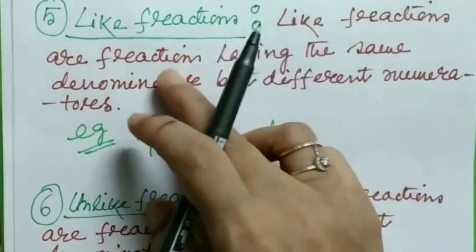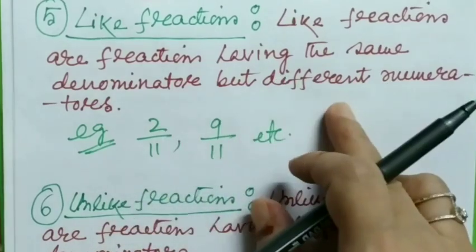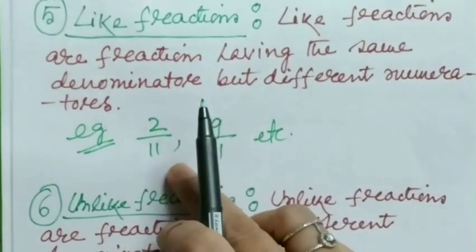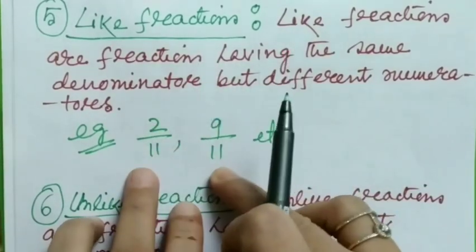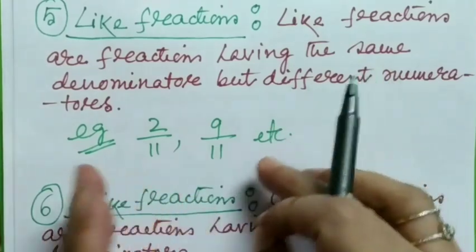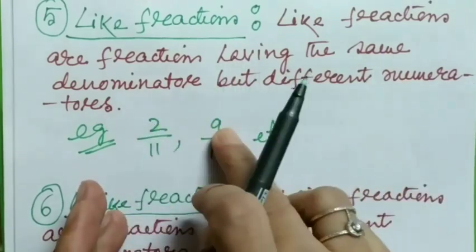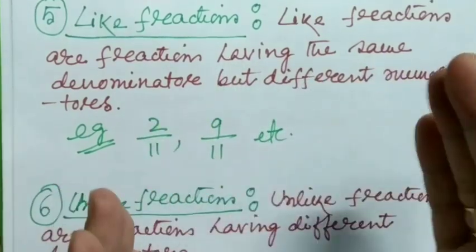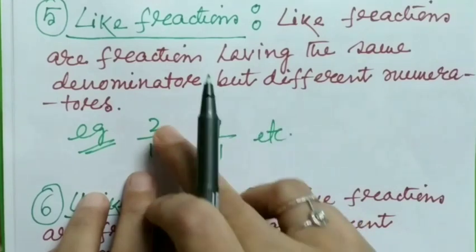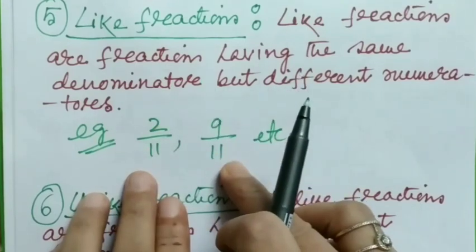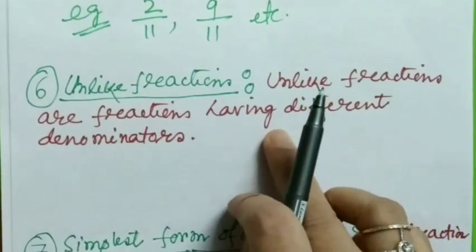Next, like fractions: these are fractions having the same denominator but different numerators. For example, 2/11 and 9/11 — the numerators are different and the denominators are the same. The numerators must be different because if the numerators were the same, the fractions would be equal. So only the numerator should be different while the denominator remains the same.